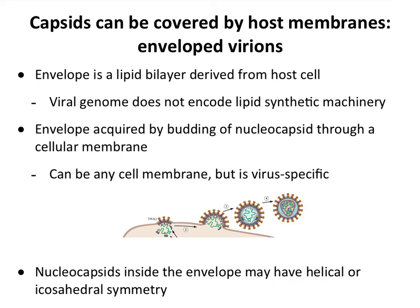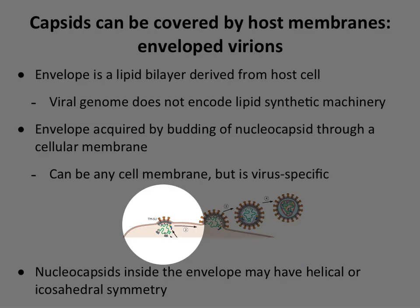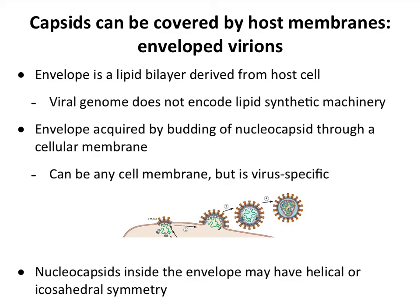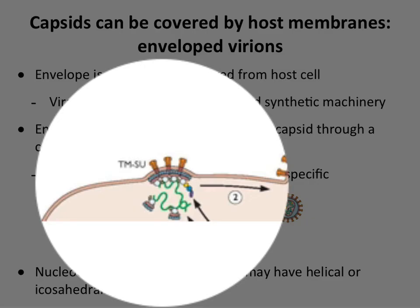This is the budding process summarized here. The viral components are placed near the plasma membrane, and then the whole membrane buds out, and eventually this bud pinches off to form a particle. So you can see the membrane, in this case, is derived from the plasma membrane.